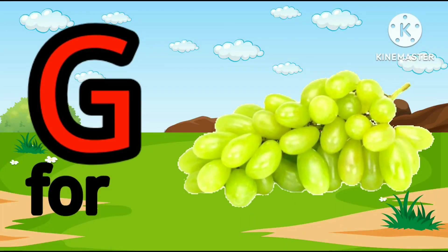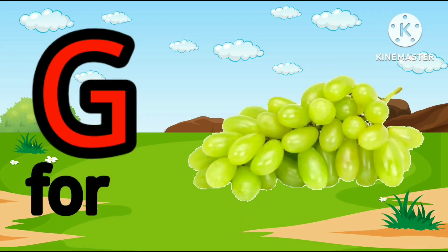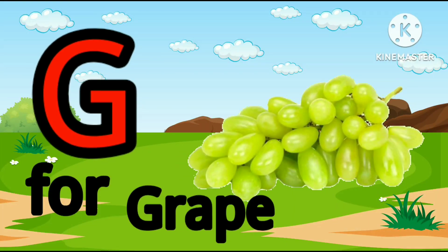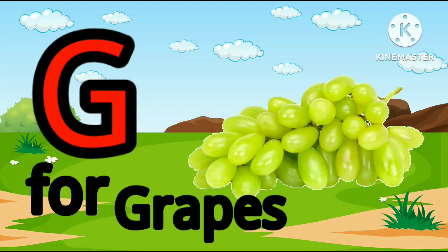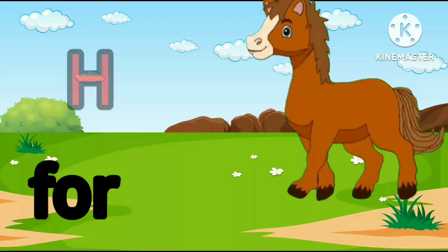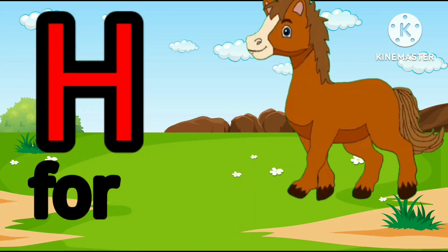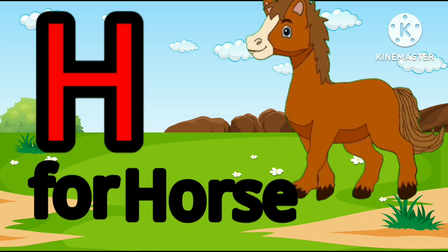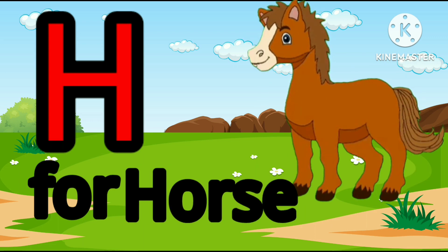G. G for grapes. Grapes means angoor. H. H for horse. Horse means ghoda.